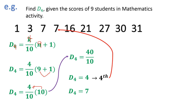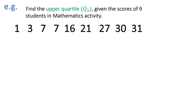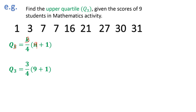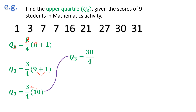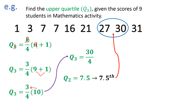Now let us deal with quartile 3, also known as the upper quartile, with the same set of data. Since we're talking about quartile, we use Q sub k equals k over 4 times n plus 1. Our k becomes 3 and n remains 9. So Q3 equals 3 over 4 times (9 plus 1). 9 plus 1 is 10, and 10 times 3 is 30. So Q3 equals 30 over 4, giving us 7.5, meaning the location of quartile 3 is at the 7.5 position.